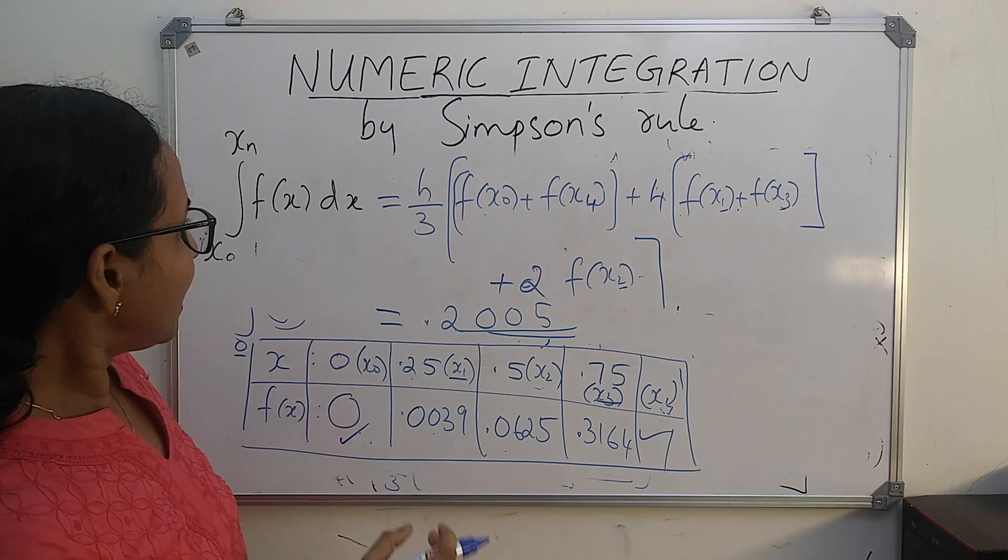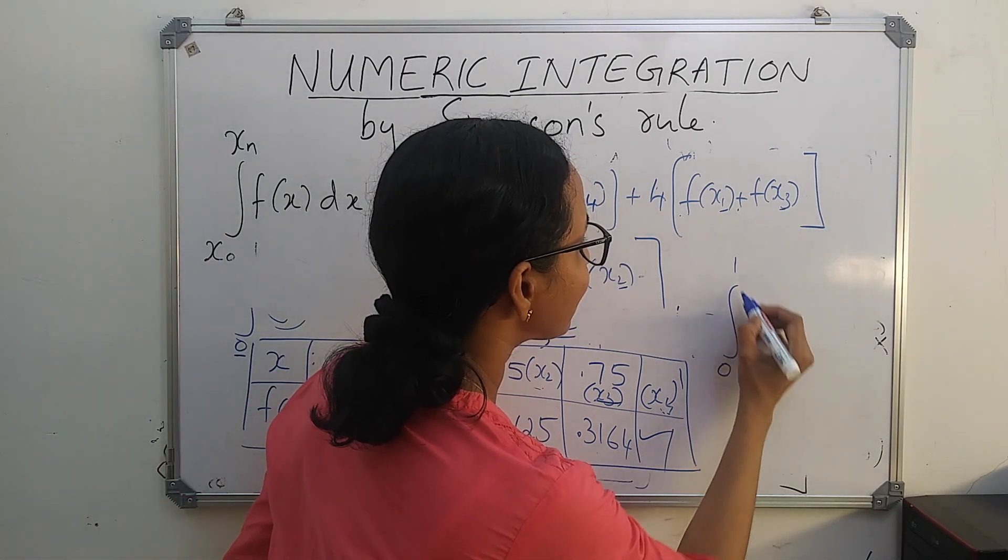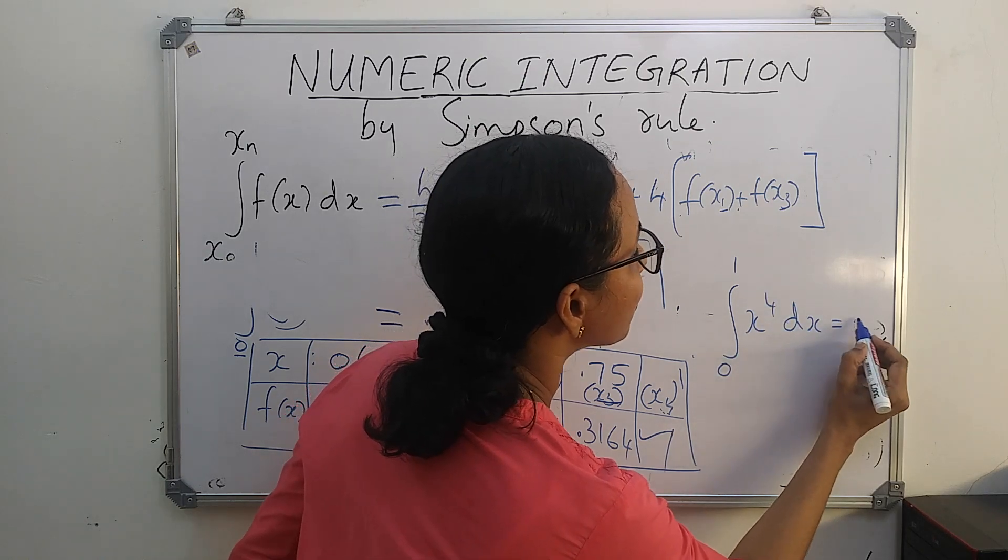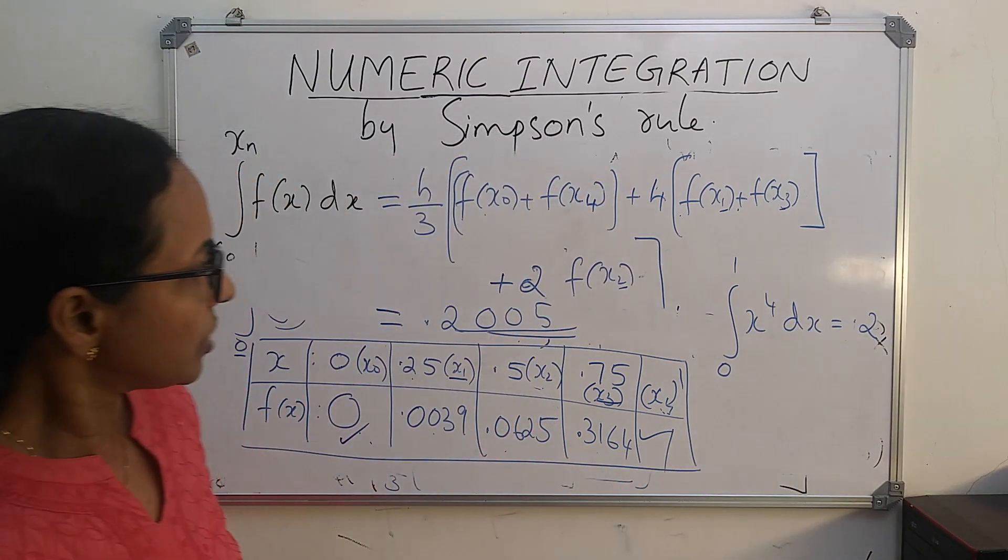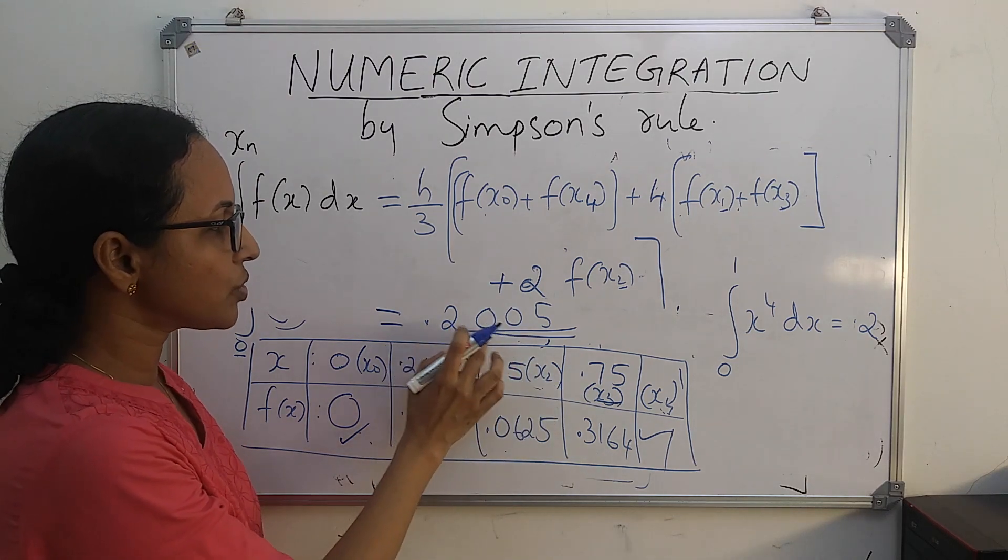By actual integration, integral from 0 to 1 x to the power 4 dx equals 0.2. Here we got 0.2005, so the error is 0.0005.